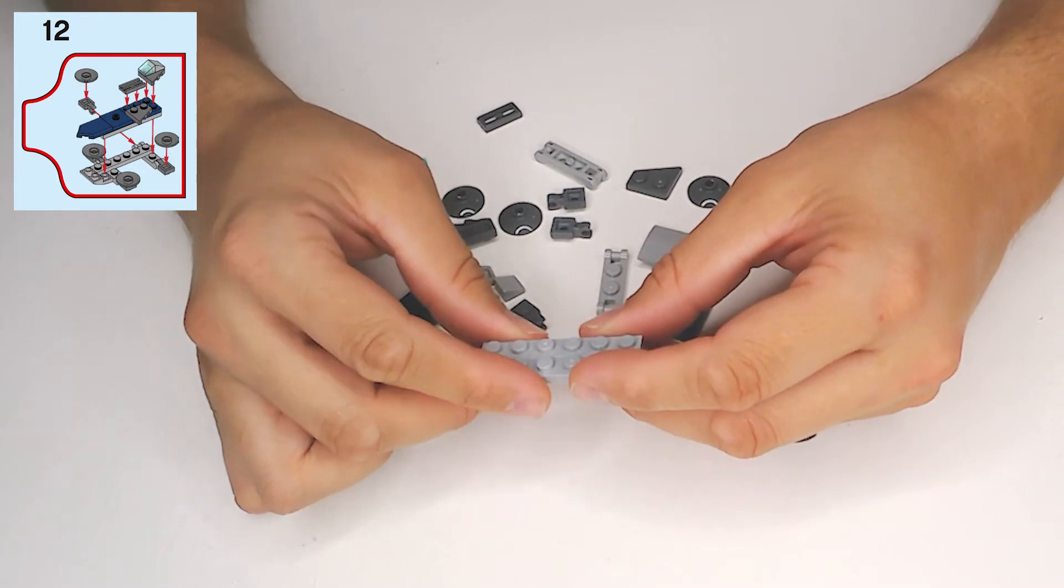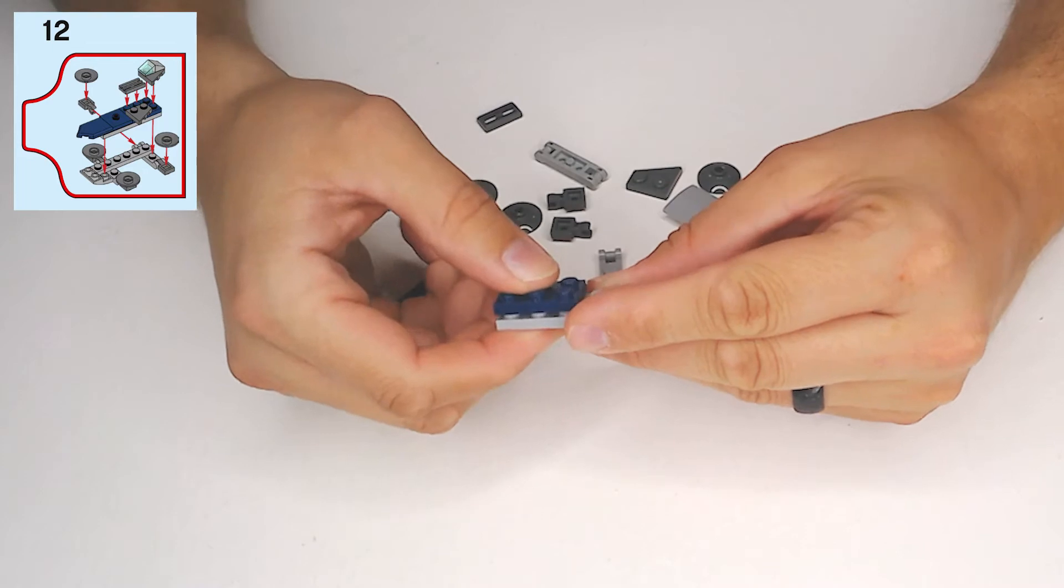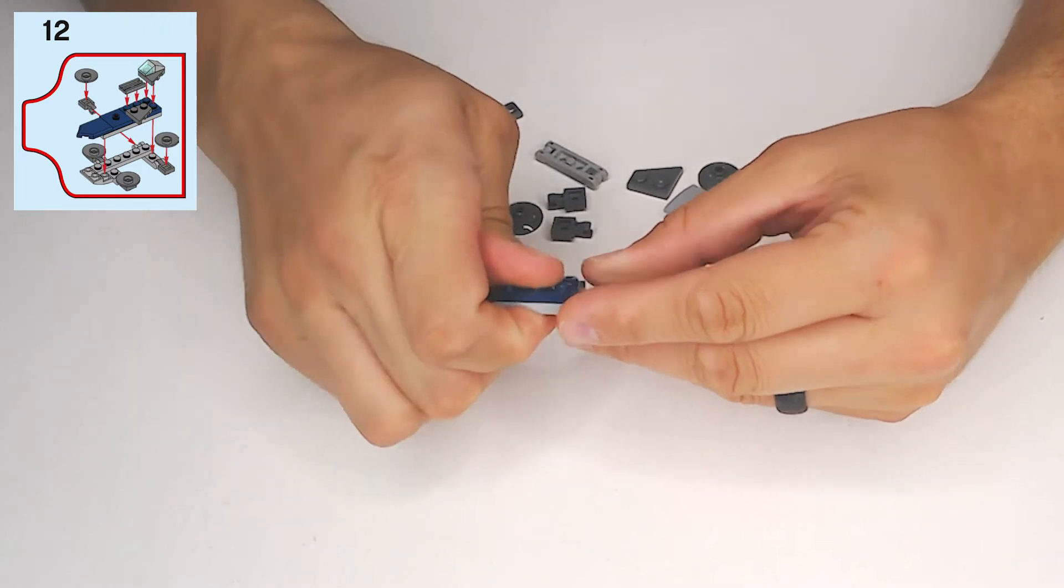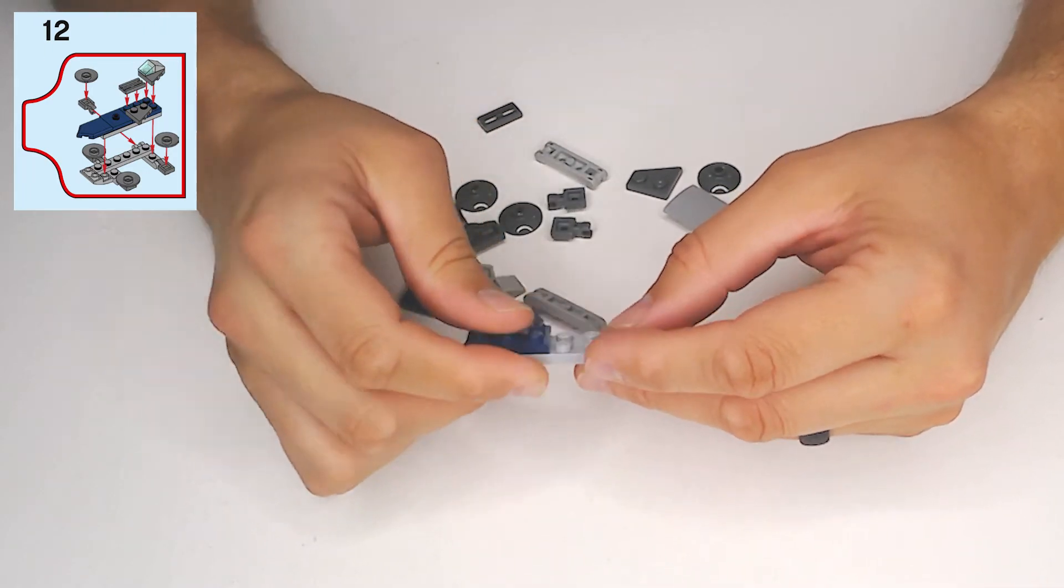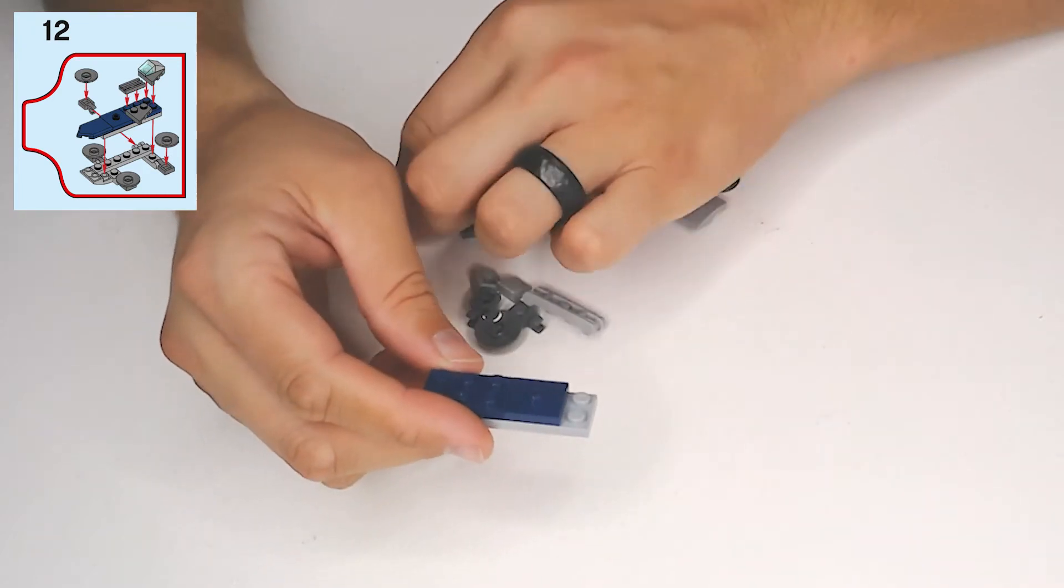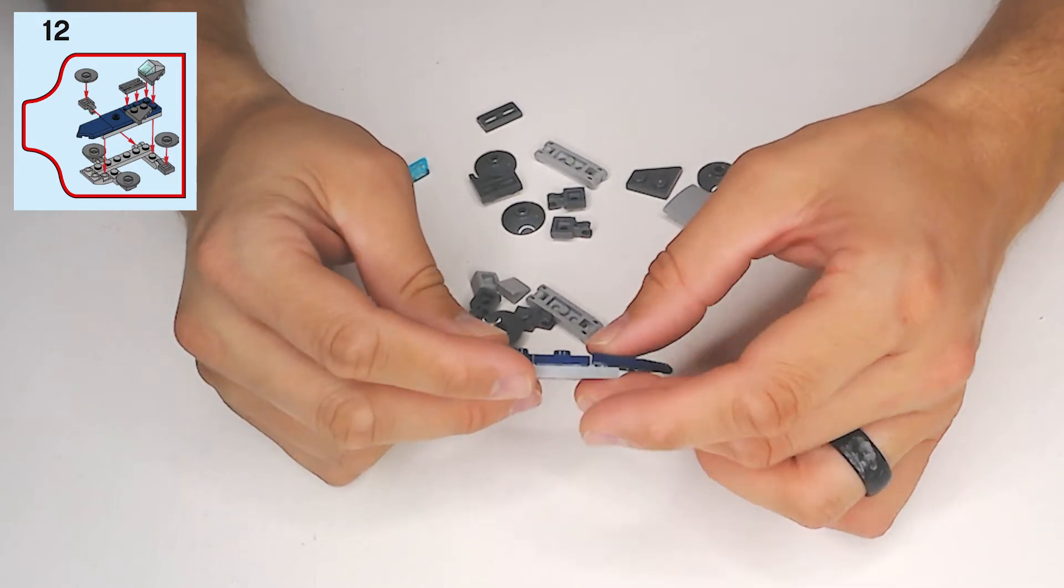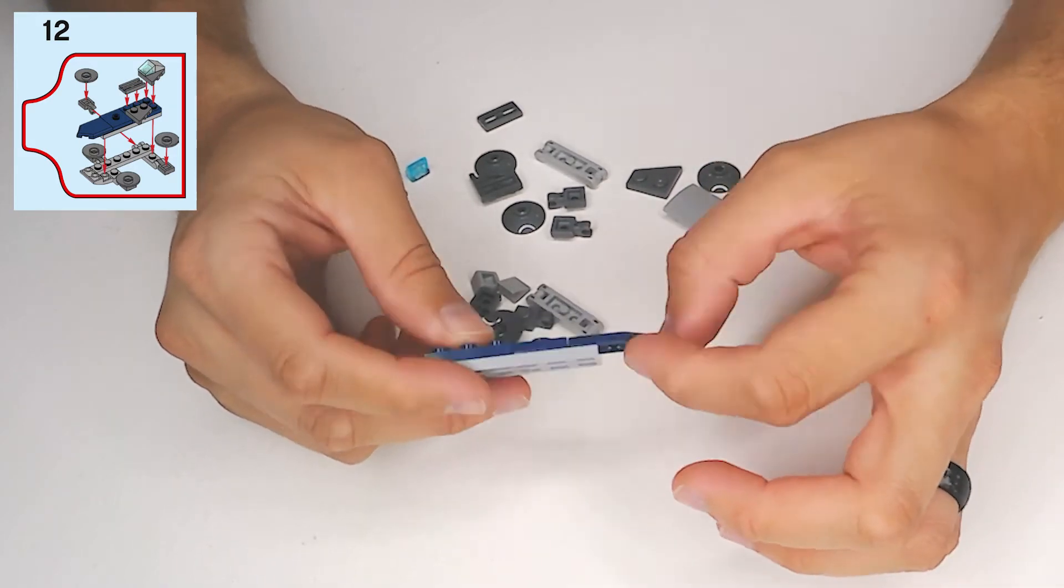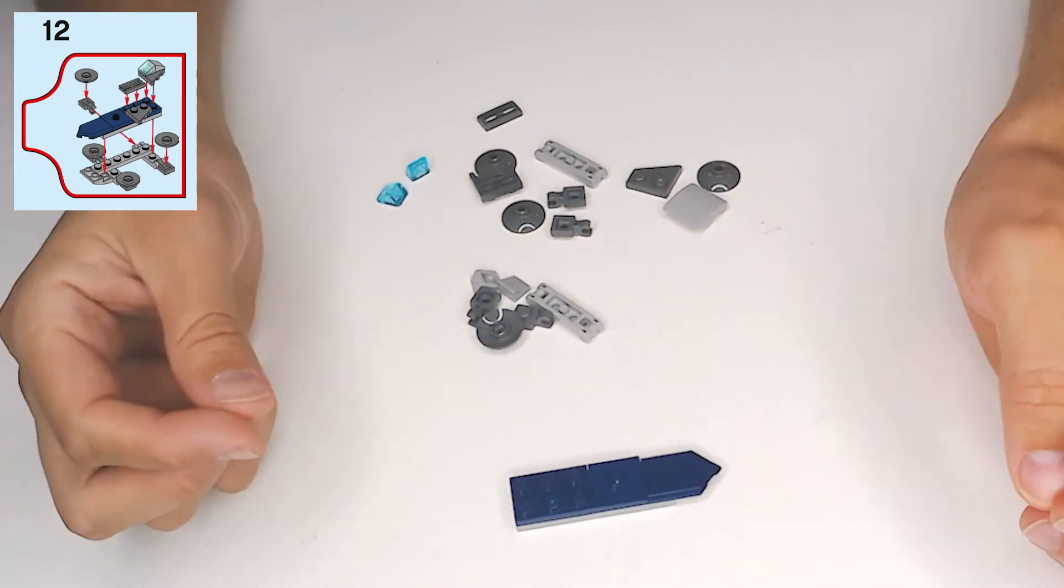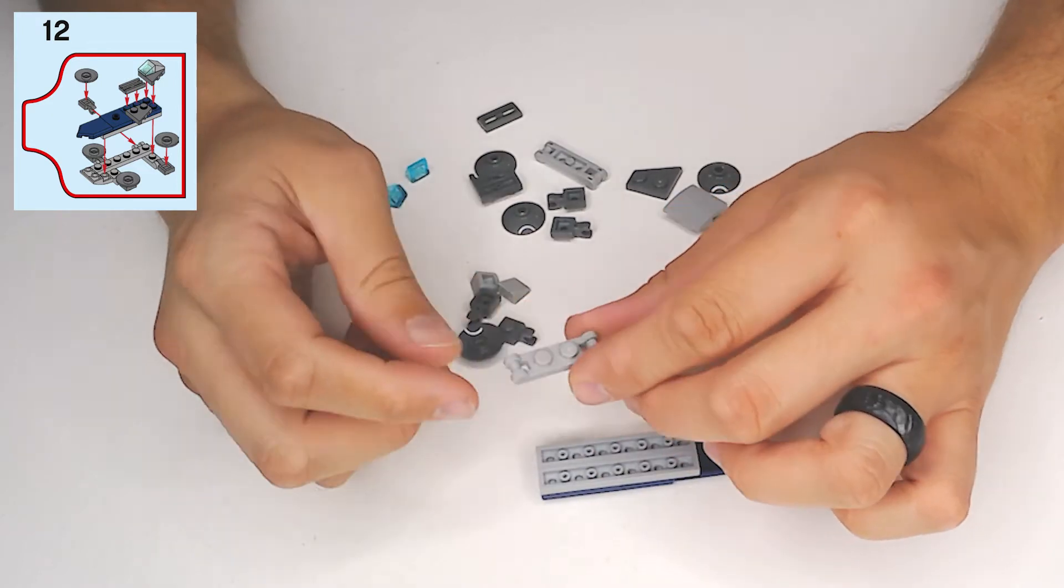We're going to put this dark blue two by three plate, and then we're going to put this two by two right through the offset plate there. Then we're going to get this plate piece in dark blue and stick it on those last two studs. It's going to be two rows with one sticking out. Then on the underneath, we're going to flip this over and get this